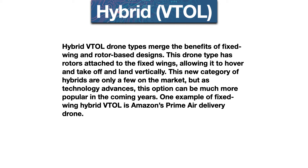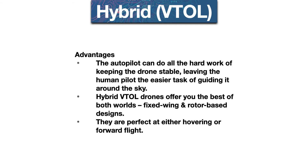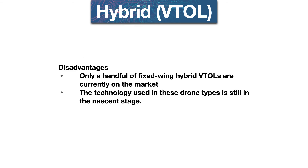Hybrid VTOL drone types merge the benefits of fixed wing and rotor-based designs. This drone type has rotors attached to the fixed wings, allowing it to hover and take off and land vertically. Only a few are currently on the market, but as technology advances this option may become much more popular. Advantages are that they can do all the hard work of keeping the drone stable, leaving the human pilot the easier task of guiding it. They offer the best of both worlds — fixed-wing and rotor-based designs — and are perfect at both hovering and forward flight. However, the technology used in these drone types is still in the nascent stages.